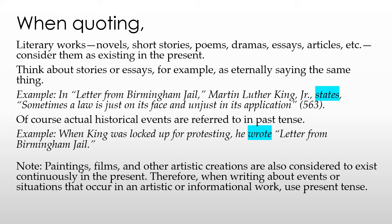For example, you might say: in 'Letter from Birmingham Jail,' Martin Luther King Jr. states, 'Sometimes a law is just on its face and unjust in its application.' Of course, actual historical events are referred to in the past tense. So sometimes you do have to switch from past tense to present tense if you're talking about history versus something that happens in a story or an article. When King was locked up for protesting, he wrote 'Letter from Birmingham Jail.'